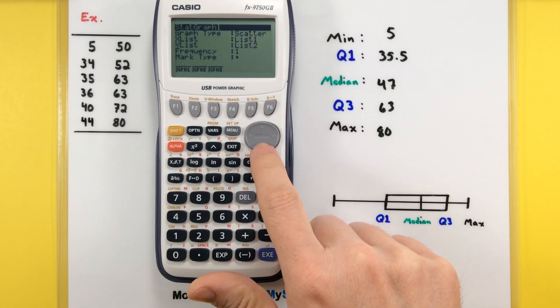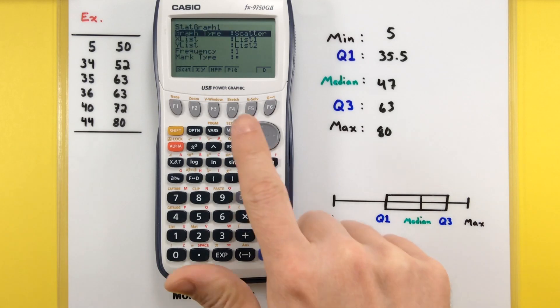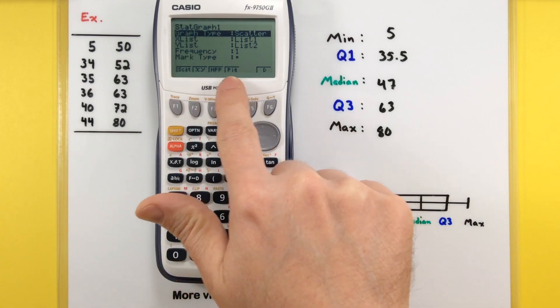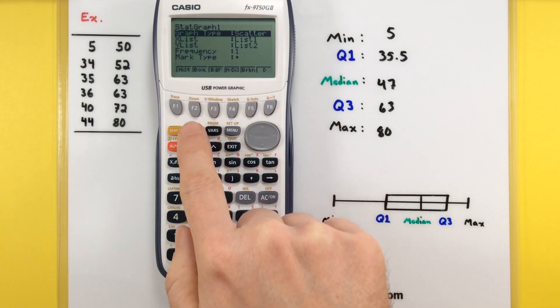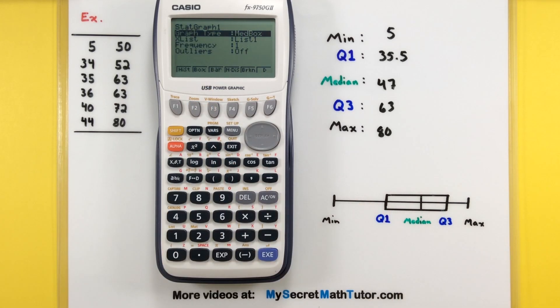And you want to change the graph type into a box. So it's set to scatter. Box is not an option until you press F6 to get a few more. There's our box. So we'll press that one.